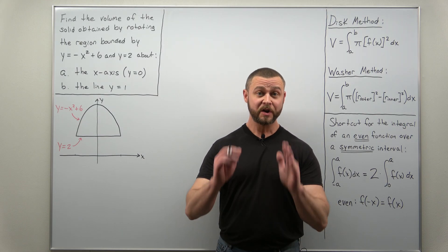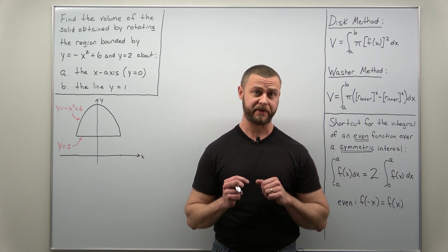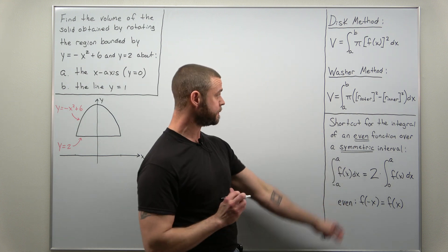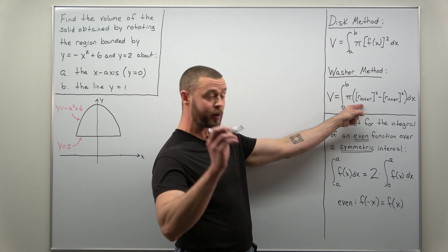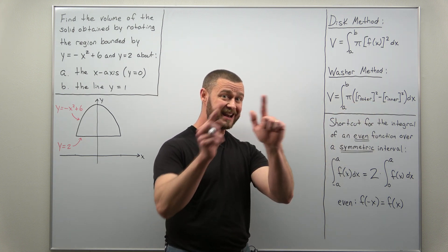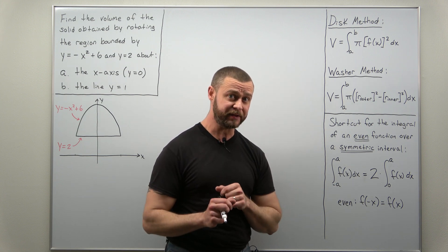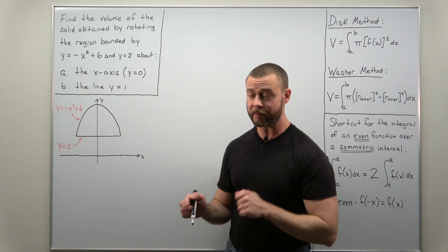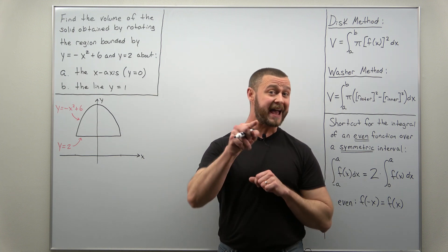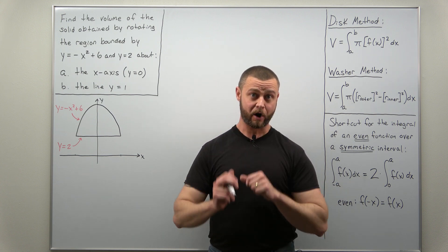Greetings fellow mathematicians. We're going to take a look at a volume problem where we can apply the washer method. To get started, make sure you understand the formula for the washer method, which is written in terms of r outer squared and r inner squared. Here r outer and r inner are always determined relative to your axis of rotation. This problem has two parts where the only difference is the axis of rotation, and that's going to make a difference for determining r outer and r inner.